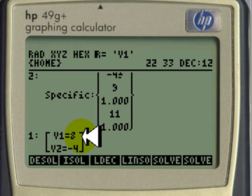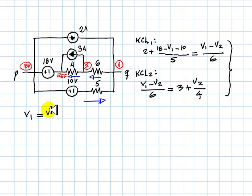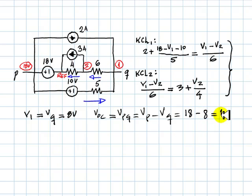The solution is V1 is 8 volts. V1 which is VQ with respect to the reference is 8 volts. That means that the open circuit voltage which is VPQ, that is VP minus VQ with respect to the same reference, that would be P is 18 volts higher than the reference and Q is 8 volts higher than the same reference. The open circuit voltage which is also VTH is 10 volts, first part of the exercise.